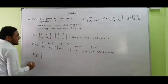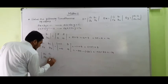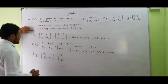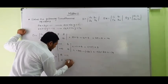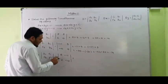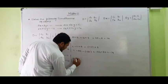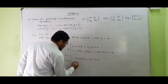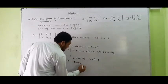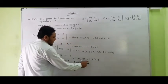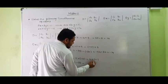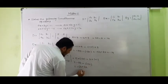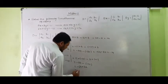Now we will find DY. DY is equal to A1, A2, C1, C2. Substituting: A1 is 5, A2 is 2, C1 is negative 11, and C2 is negative 10. So: 5 multiplied by negative 10 is negative 50, minus 2 multiplied by minus 11 is minus 22. The minus minus becomes plus, so it is 22 minus 50, giving DY equal to minus 28.